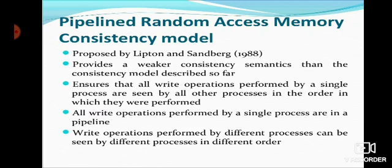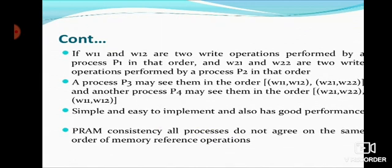The next consistency model is the Pipeline Random Access Memory (PRAM) consistency model, proposed by Lipton and Sandberg in 1988. It provides weaker consistency semantics than the models described so far. It ensures that all write operations performed by a single process are seen by all other processes in the order they were performed. Write operations performed by different processes can be seen by different processes in different orders. This model is simple, easy to implement, and has good performance. However, all processes do not agree on the same order of memory reference operations.